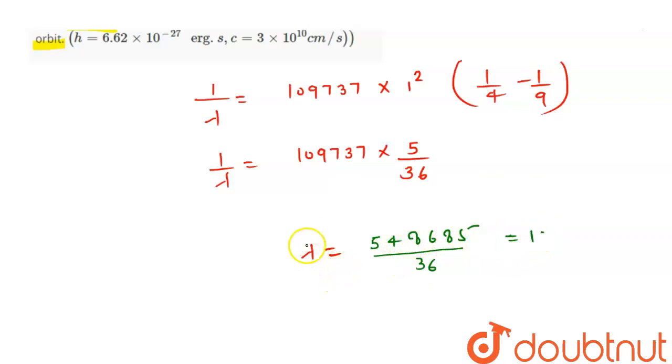Now this is not lambda's value. This is 1 upon lambda's value. So this becomes 15,241.2. Now lambda's value क्या आजाएगी? 1 upon 15,241.2.